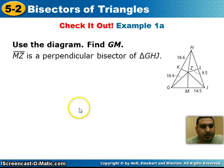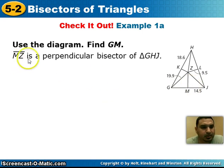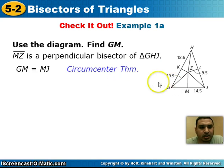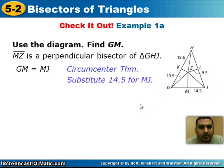Next example: using the diagram, we want to find the distance from G to M. Segment MZ is a perpendicular bisector of triangle GHJ. By the circumcenter theorem, GM equals MJ. Since MJ is 14.5, the distance from G to M is 14.5 units.